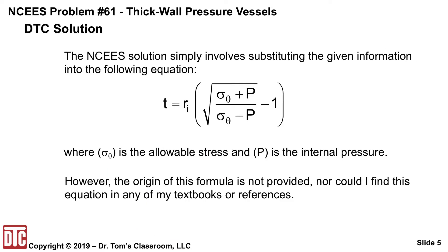The NCEES solution simply involves substituting the given information into the following equation: t equals Ri times the square root of sigma theta plus P divided by sigma theta minus P minus one, where sigma theta is the allowable stress that's given and P is the internal pressure. However, the origin of the formula is not provided, nor could I find it in any of my textbooks or references, and it's not in the reference handbook. So I'm not sure what we would do with this if they did not give it to us.